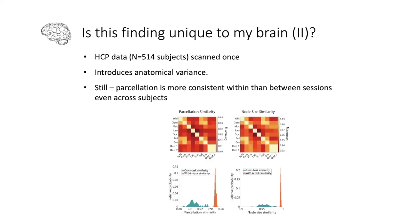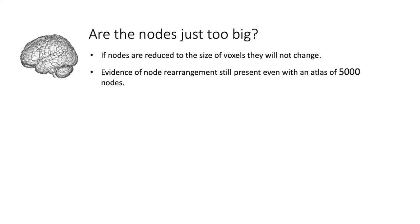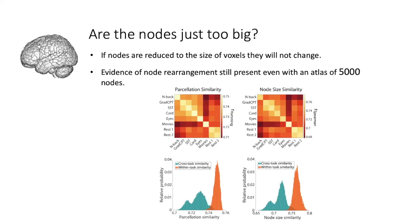We could also predict which task for both the Midnight Scan Club data and the HCP data. You might say this is just because the nodes are too big, and that if you go down to a small enough node size they shouldn't change. But even at 5,000 nodes, we still see very reproducible changes. So this effect is not an artifact of node size.